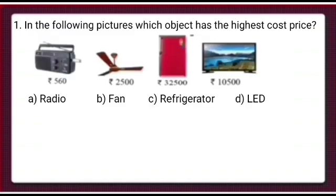In the following picture, which object has the highest cost price? Children, here the cost prices of various objects are shown. The cost price of radio is Rs. 560. The cost price of fan is Rs. 2,500. The cost price of fridge is Rs. 32,500. And the cost price of LED is Rs. 10,500.